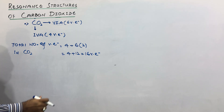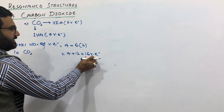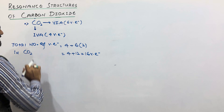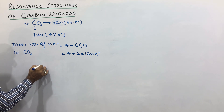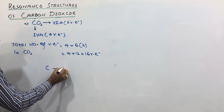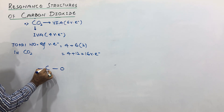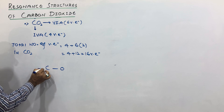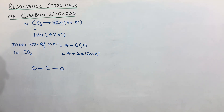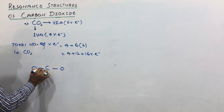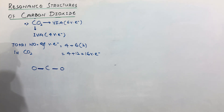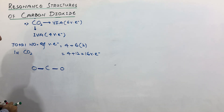Now we need to distribute these sixteen valence electrons to the atoms of CO2. For that, carbon is the central atom, oxygen atoms are the peripheral or terminal atoms, and they are bonded to each other. So first of all, we will consider a single bond between carbon and each oxygen.